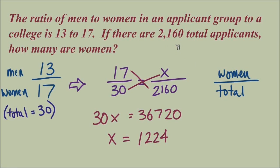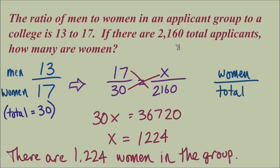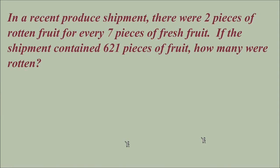So when we are looking at this group where there are 2,160 total applicants, there are 1,224 women in that group. Here's a problem for you to try that is similar to that last example. Pause the video, go through this problem, and then restart, we'll look through the answer.